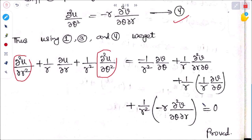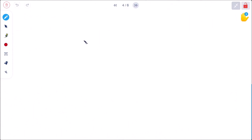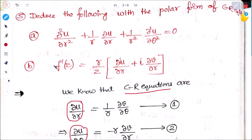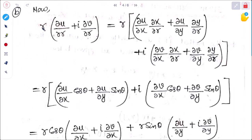Now for the second part: finding f'(z) in the form (r/z)(∂u/∂r + i∂v/∂r). We start with r times (∂u/∂r + i∂v/∂r). We write ∂u/∂r using the chain rule as (∂u/∂x)(∂x/∂r) + (∂u/∂y)(∂y/∂r), and similarly for ∂v/∂r.